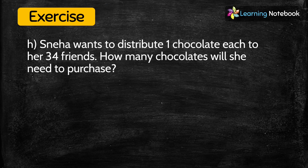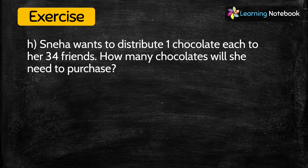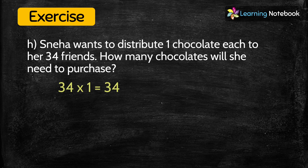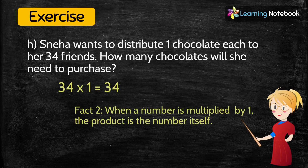The next question is: Sneha wants to distribute one chocolate each to her 34 friends. How many chocolates will she need to purchase? To find the number of chocolates, we multiply 34 by 1, which equals 34.